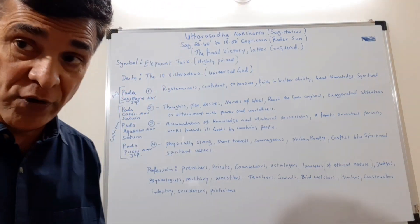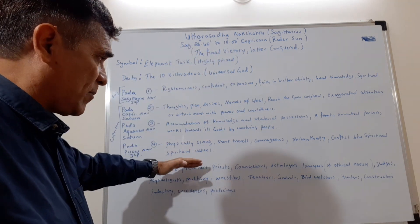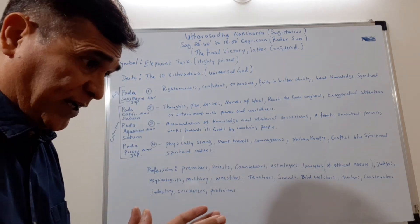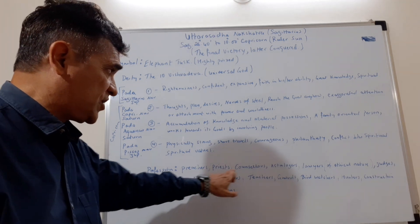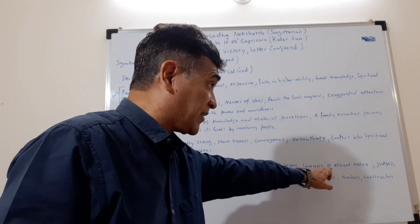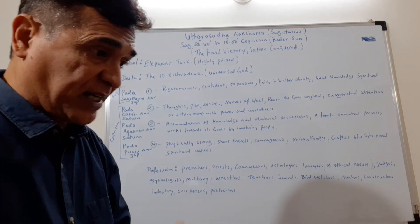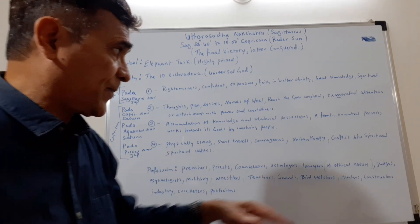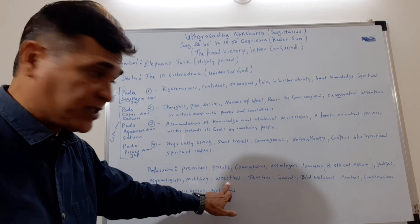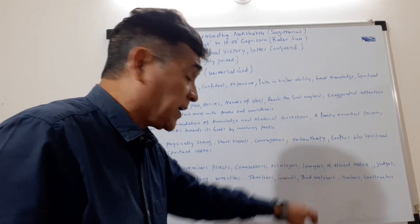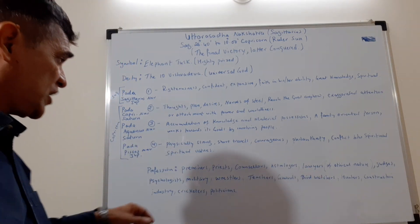For professions and careers of those born under Uttara Ashada nakshatra — whichever pada you are born in — these people have a passion for professions like preacher, priest, counselor, astrologer, or lawyer. As lawyers they work with an ethical nature, only taking cases they believe are just. They are also good judges, psychologists, military personnel, wrestlers, teachers, guards, security guards, bird watchers, hunters, and those in the construction industry.